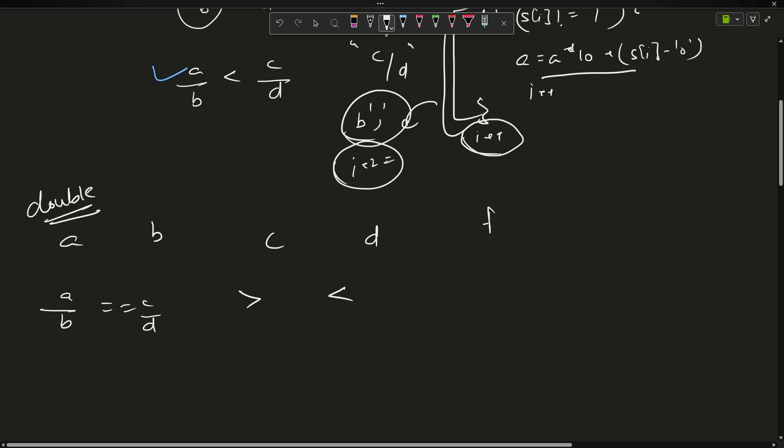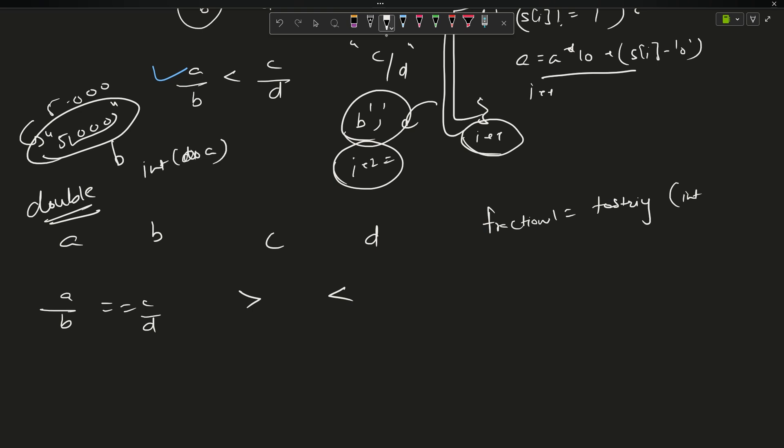For the result you will have to do something like this: you can create fraction one which equals a by b equals to string. If you are taking them as double, first convert them into int. Why? Because if I take double of 5.000 and I convert it into a string, it will look something like 5.000. I need to avoid these zeros. I want to get only the integer.